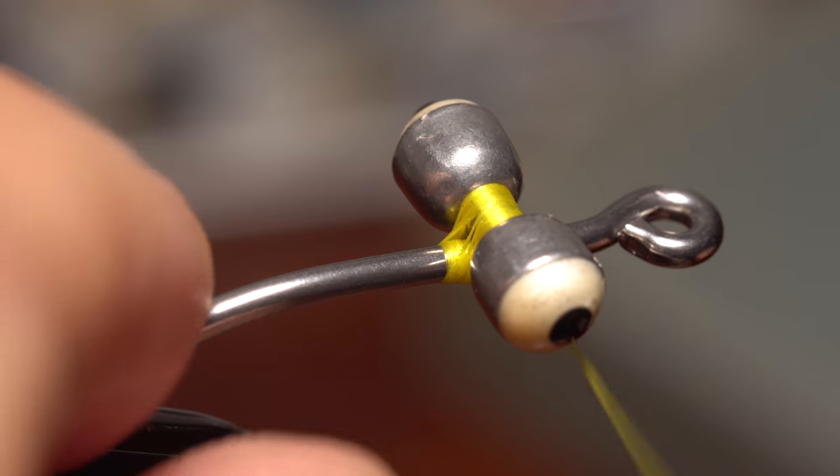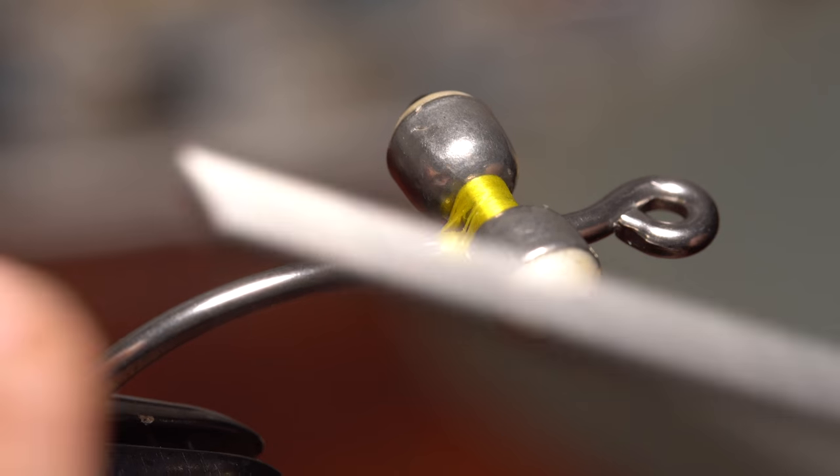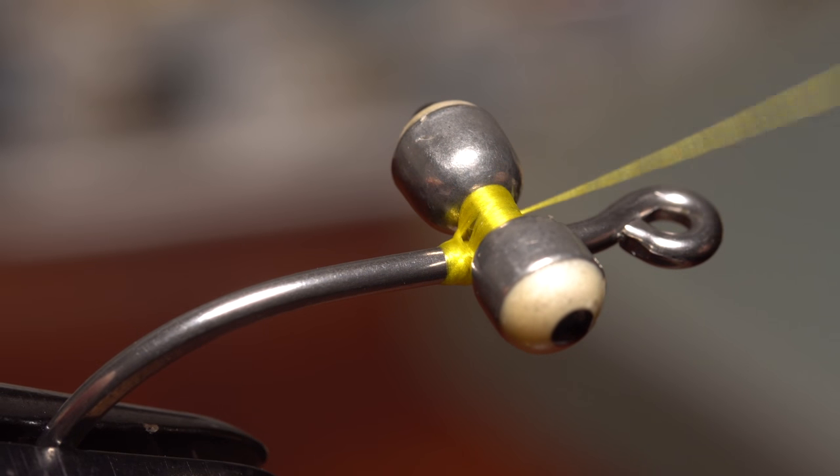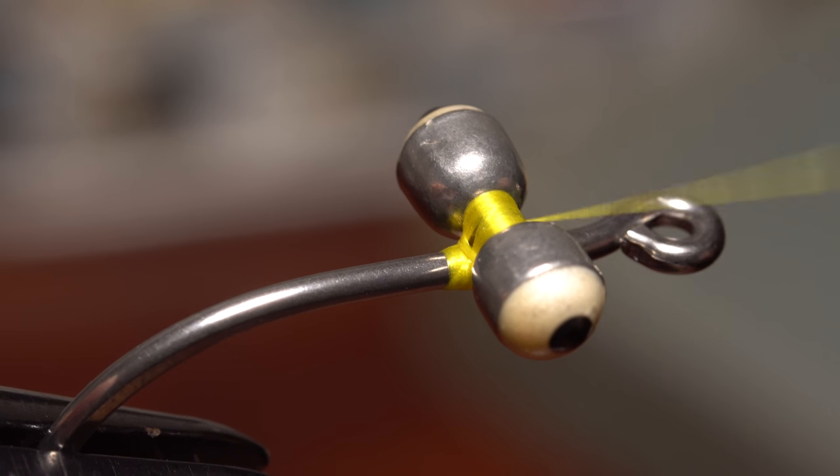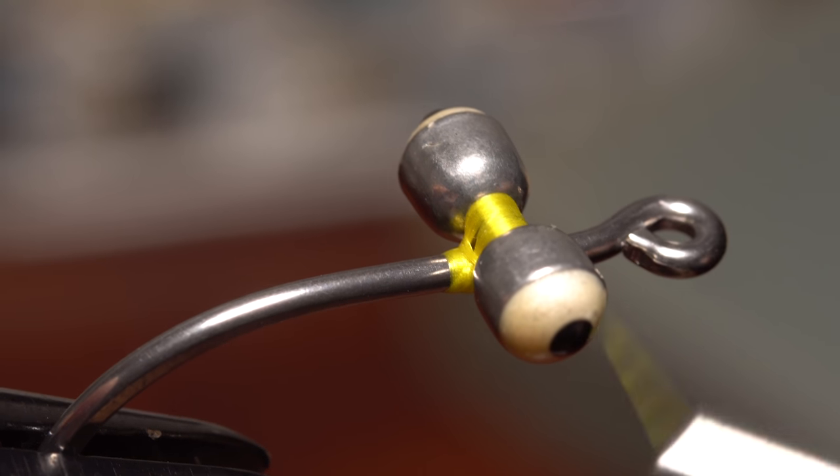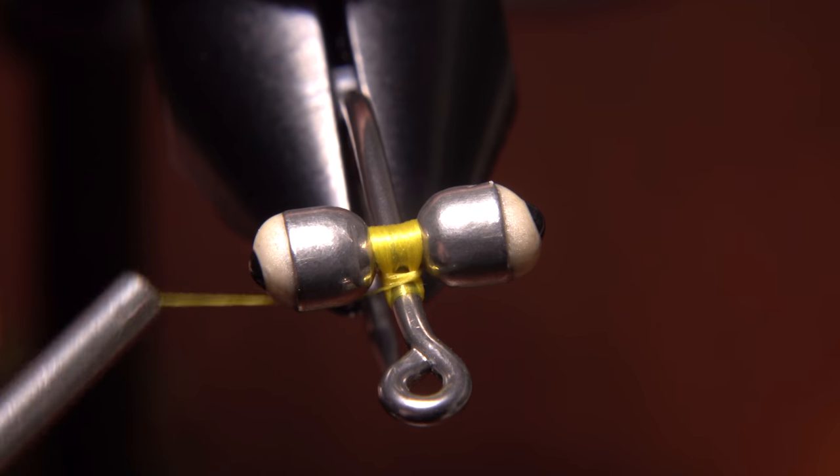Then take a single wrap around just the hook shank and begin making circular wraps beneath the eyes but on top of the shank. This will pull the previous wraps together as well as create a little shelf on either side of the shank to further stabilize the dumbbell.